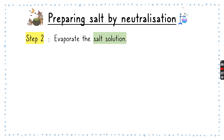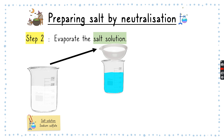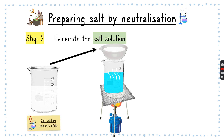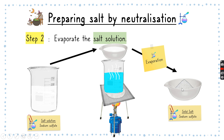To prepare just the salt from the solution, remember it's a solution where the solute is the salt dissolved in a solvent. So we can evaporate the salt solution to get just the salt. We take the sodium sulfate solution and put it on an evaporating dish on top of a beaker filled with water, then boil the water. The heat evaporates all the water, leaving us with only solid sodium sulfate salt.